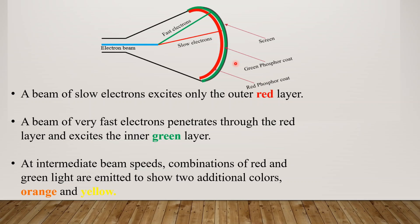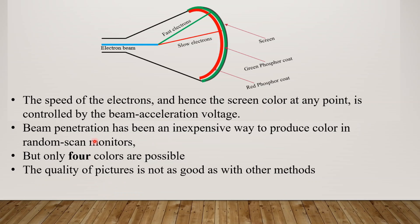Then we use red color and green color. At an intermediate beam speed, a combination of red and green light is emitted, showing two additional colors: orange and yellow. So slow electrons give red, fast electrons give green, and intermediate speed gives orange and yellow.